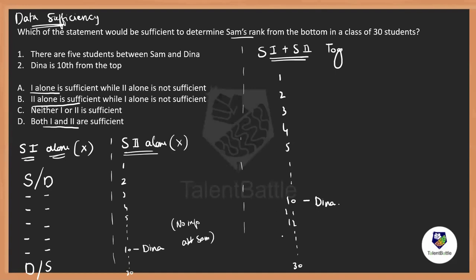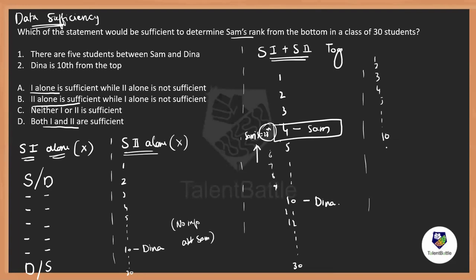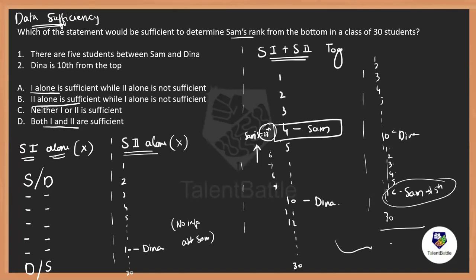With both statements together, Sam could be above Dina — making Sam's rank 28th from the bottom — or Sam could be below Dina, placing Sam at the 16th position. Since there are two possible positions for one person, we still cannot determine Sam's exact rank. Therefore, neither statement one nor two is sufficient to answer the question. Option C is the answer.